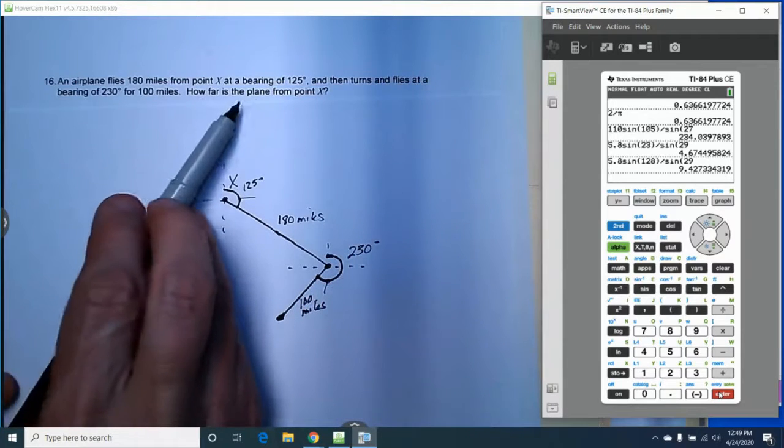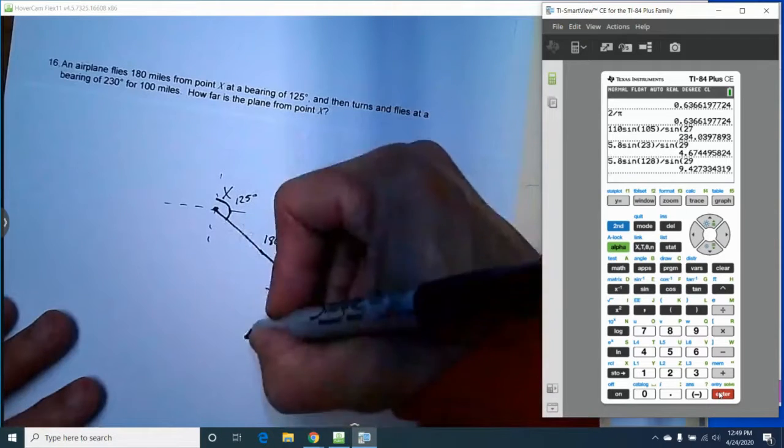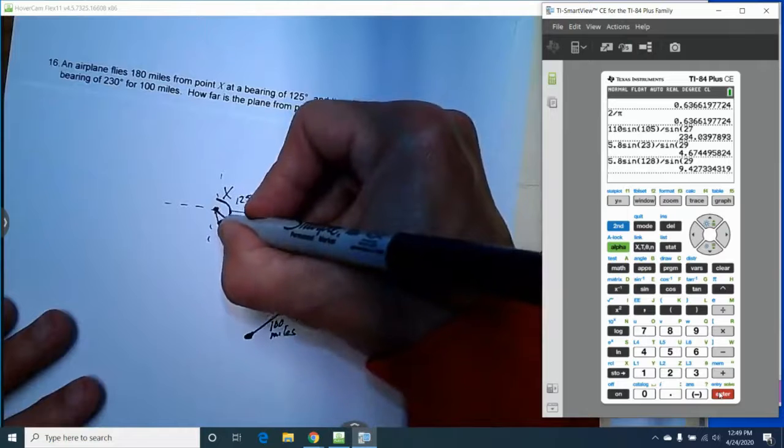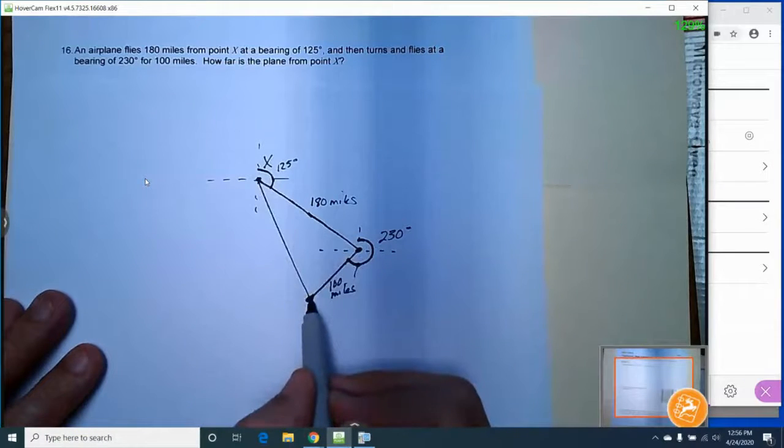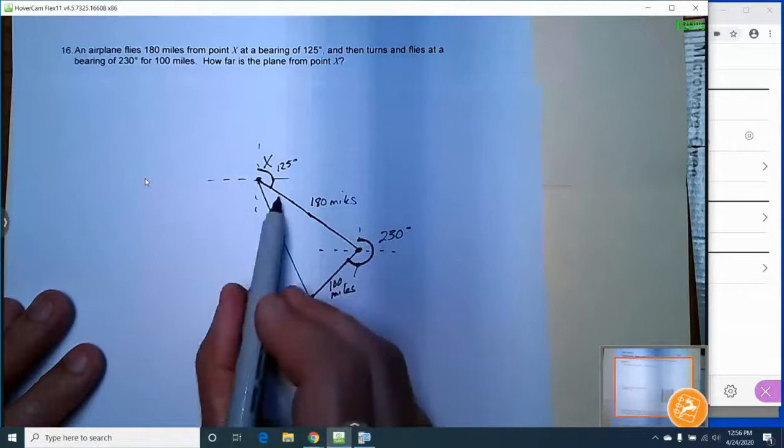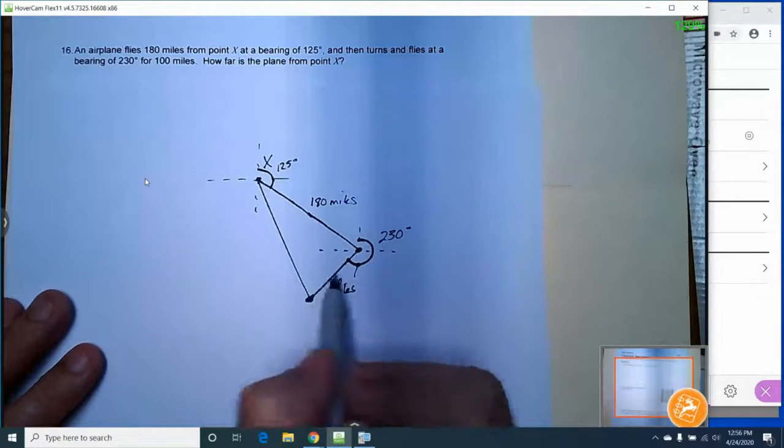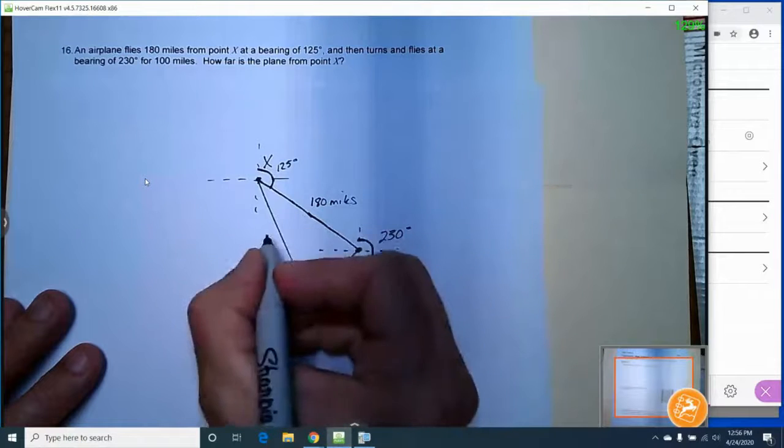So what they want to know is how far does the plane end up from point X. So we want to know the distance from point X to this point. That's going to give us a triangle. And what we're trying to find is the distance from point X to where the plane ends up. So the point is we need to find at least one of the angles in this triangle.